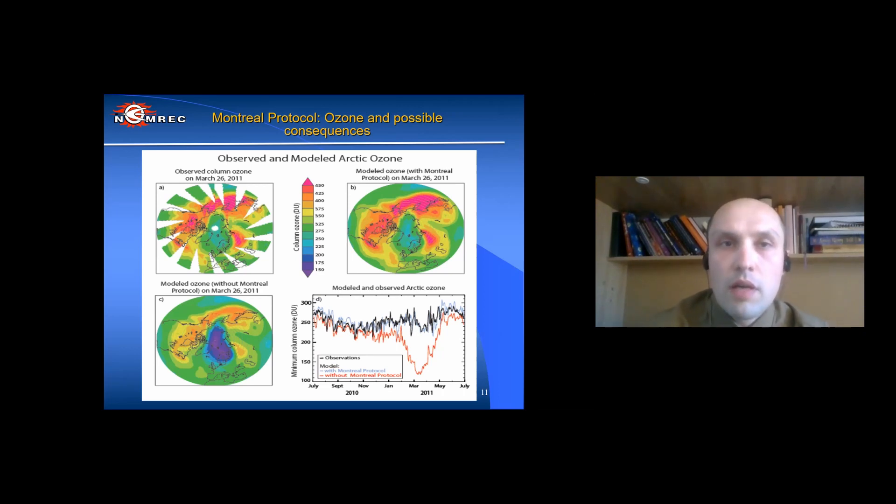You know that the Montreal Protocol was assigned to intend global actions. Again, ozone reduction and climate change - observed and modeled ozone in the Arctic. Without the success of the Montreal Protocol, a deep ozone hole could have formed in the Arctic in 2011. Bottom slide shows modeled ozone without the Montreal Protocol. That means that our actions are on the right way.